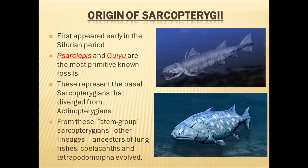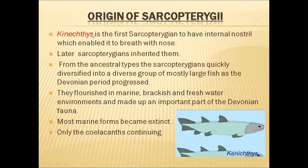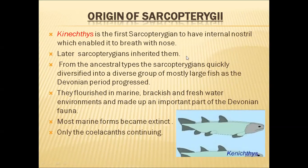Out of those fishes, Kenichthys (T-E-N-I-C-H-T-H-Y-S) is one fish. Kenichthys is the first Sarcopterygii fish to have an internal nostril, which enables it to breathe with its nose. The remaining fishes had only external nostrils, but one external nostril extended inside the head and became an internal nostril, which opened into the buccal cavity. With the help of these external and internal nostrils, Kenichthys was able to breathe air even when not respiring through gills, enabling it to live on land. Kenichthys is the first fish to develop this internal nostril.